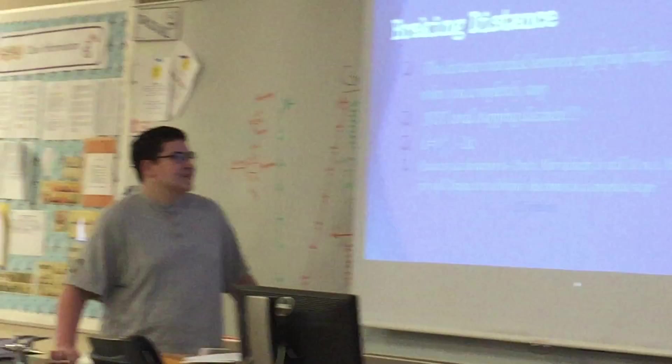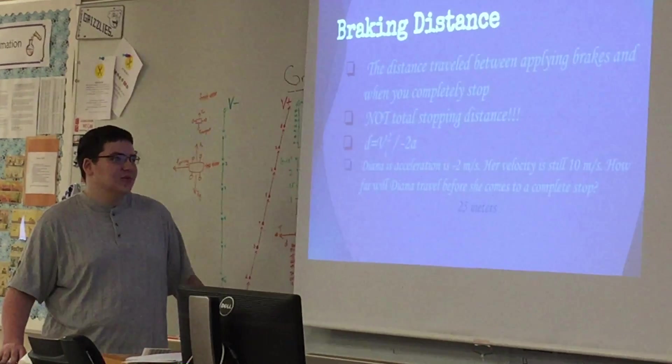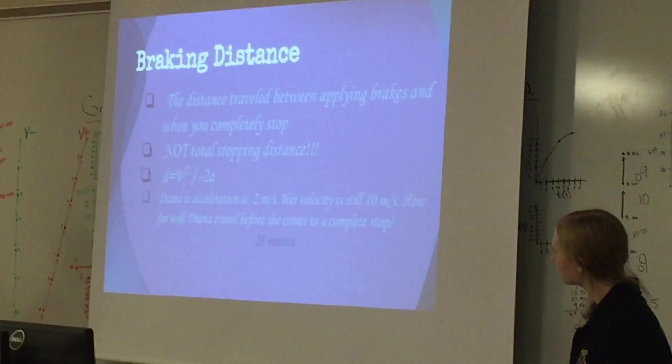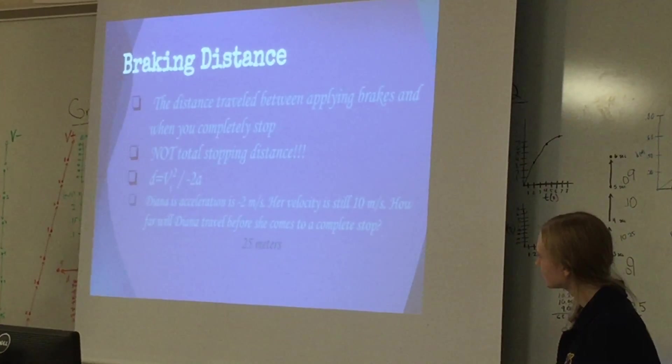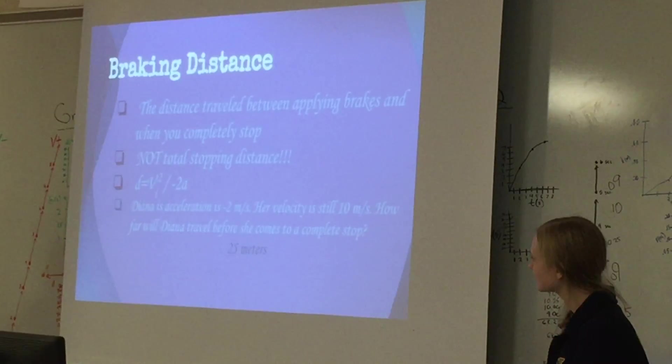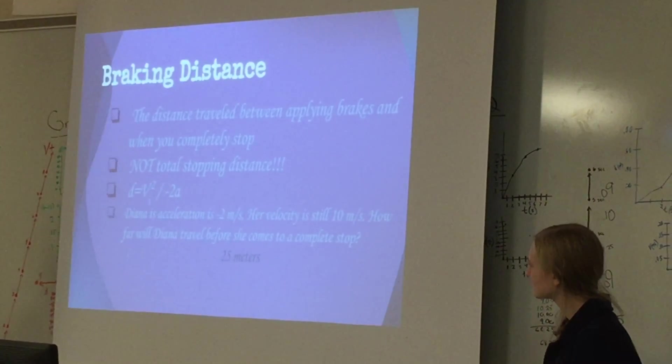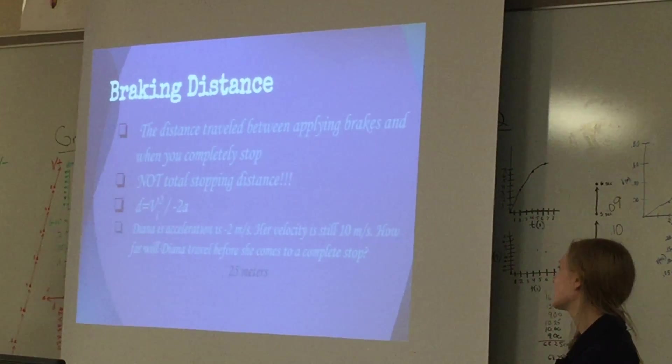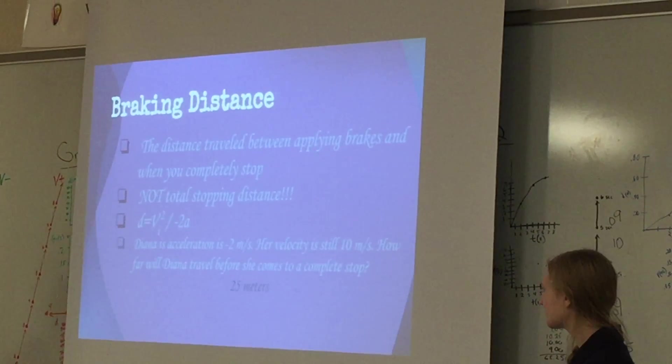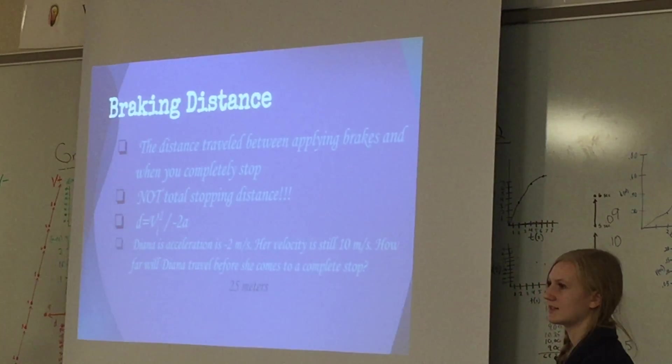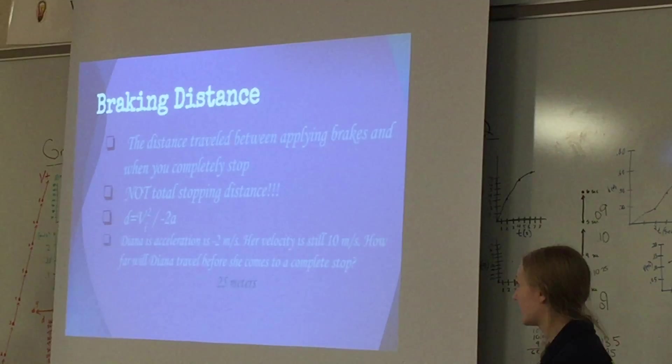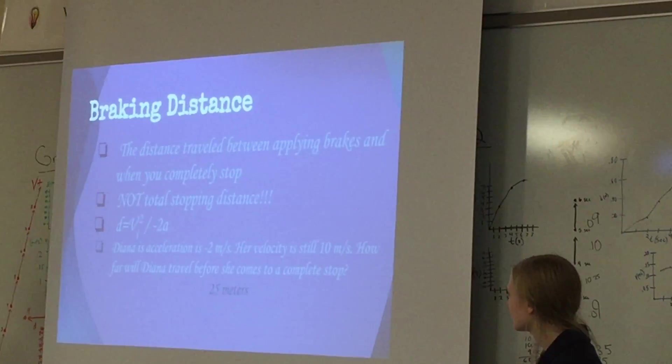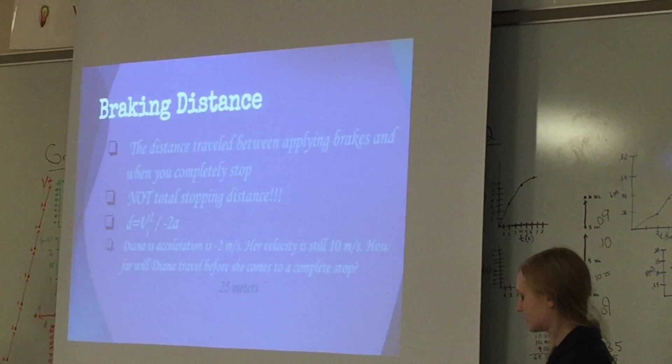The braking distance is the distance traveled between applying the brakes and when you can come to a complete stop. It is not the total stopping distance. The braking distance is your initial velocity squared divided by negative 2 times your acceleration. Diana's acceleration is negative 2 meters per second squared because it is a negative acceleration, she is slowing down. Her velocity is still 10 meters per second, and so how far she'll travel will be 25 meters.